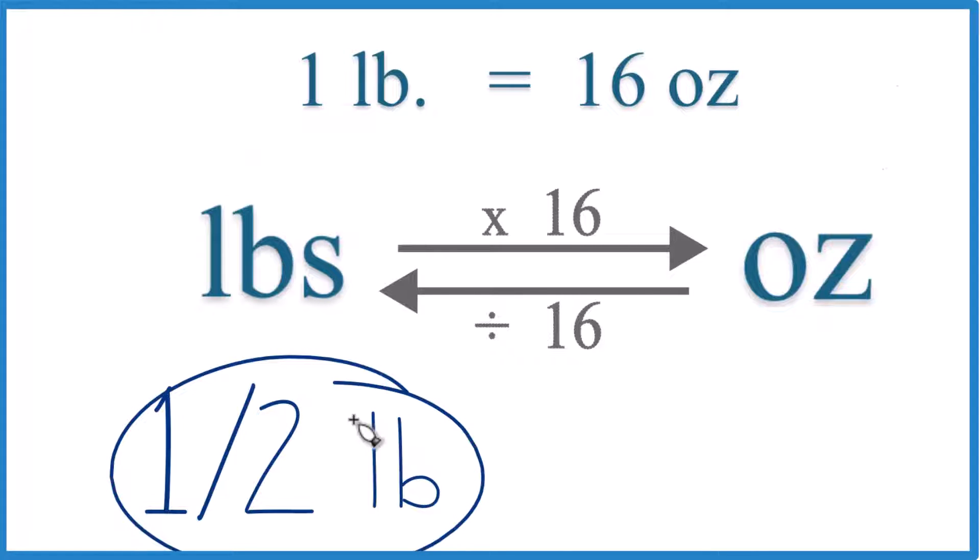Let's convert one-half pound to ounces. So how do we get one half of a pound to ounces? The trick is knowing that one pound equals 16 ounces.